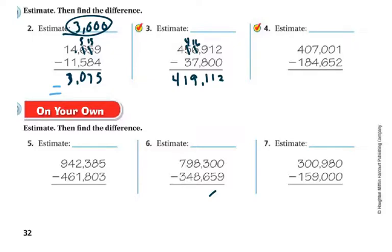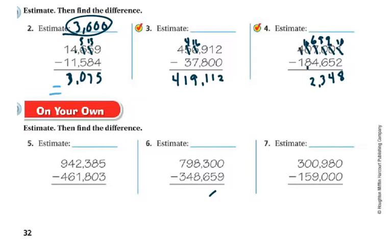Let's do one more — this one's tricky because of the zeros. I can't take 2 from 1, so I need to borrow, but I can't regroup from here or there. I have to go all the way over here to regroup. So this one becomes a 6, the middle zeros become 9s, and the ones place becomes a 10. 10 minus 2 is 8. 9 minus 5 is 4. 9 minus 6 is 3. 6 minus 4 is 2. I can't take 8 from 0, so this becomes 10, borrowing from here making it a 3. 10 minus 8 is 2. 3 minus 1 is 2. So my answer is 222,349.